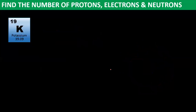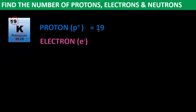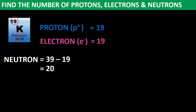Let's try another example — element potassium. The symbol for potassium is K. The atomic number of potassium is 19, and the atomic mass is 39.09, which we round off to 39. Number of protons is equal to the atomic number, so protons = 19. Electrons equal the number of protons, so electrons = 19. For neutrons: atomic mass minus number of protons = 39 minus 19 = 20.